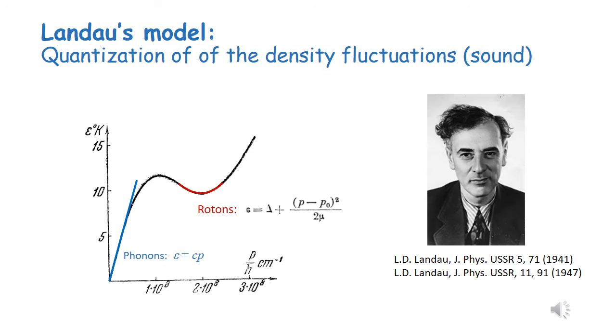In Landau's model, we have a quantization of the density fluctuations, that is sound, essentially, with the linear branch, the phonon branch, in the energy versus momentum of these fluctuations, and the parabolic minimum at finite wave vector, or finite momentum, which is the roton part of the spectrum.